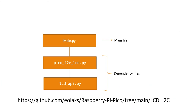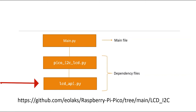We're going to create three files. One is the main.py and the other two files are pico_i2c_lcd.py and lcd_api.py. These two files are the dependency files. In our main file we're going to be calling this file, while this file calls this file. For more details of the code for these two files you can refer to the GitHub link that will be shared in the video description below.